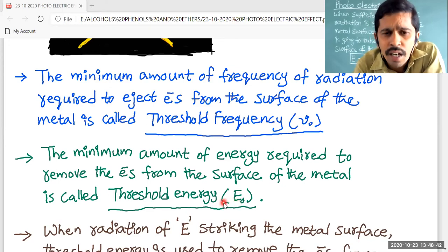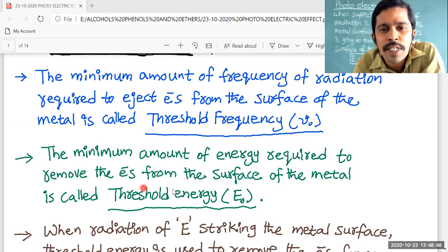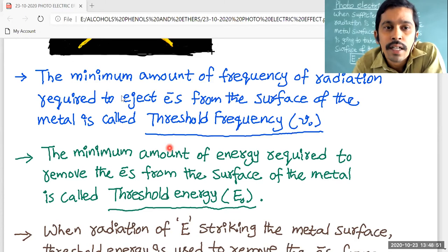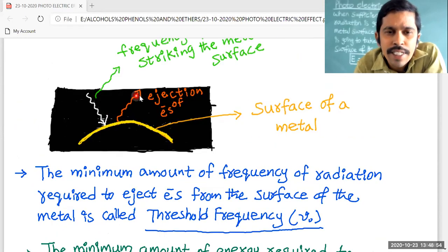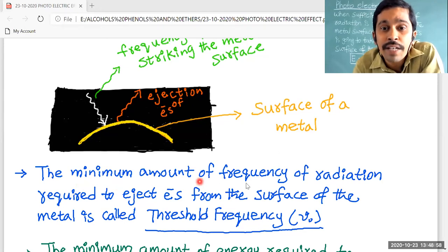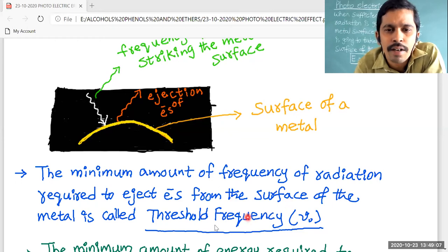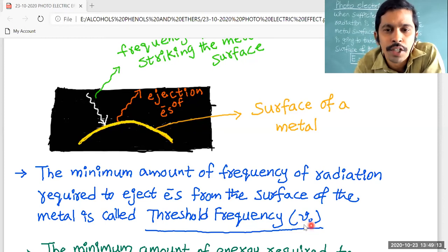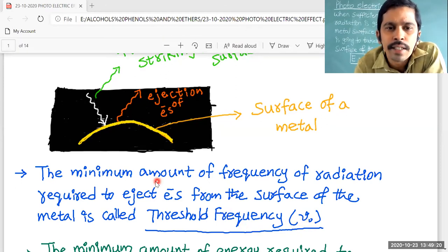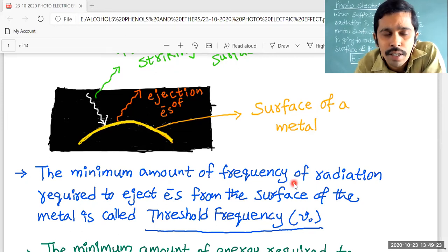So either it is the work function or it is the threshold energy — that is the minimum amount of energy required to eject an electron from the surface of the metal. The minimum frequency of radiation required to eject an electron from the surface of the metal is called threshold frequency, indicated with ν₀.